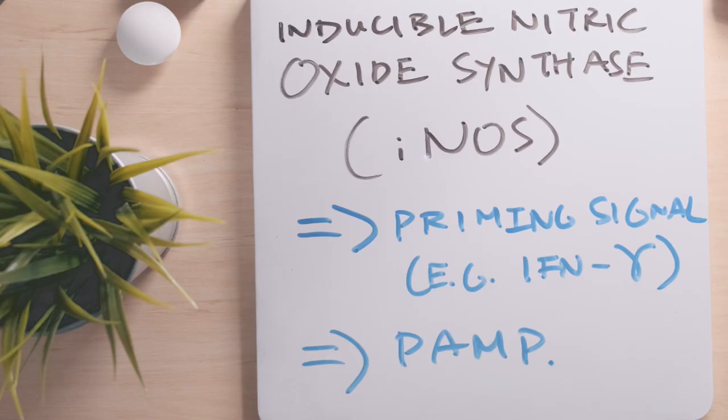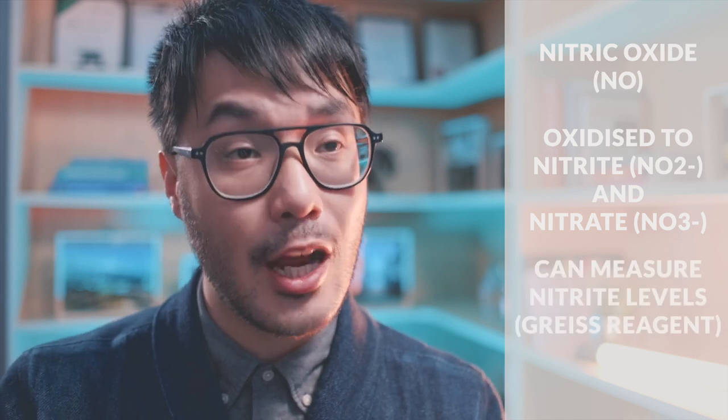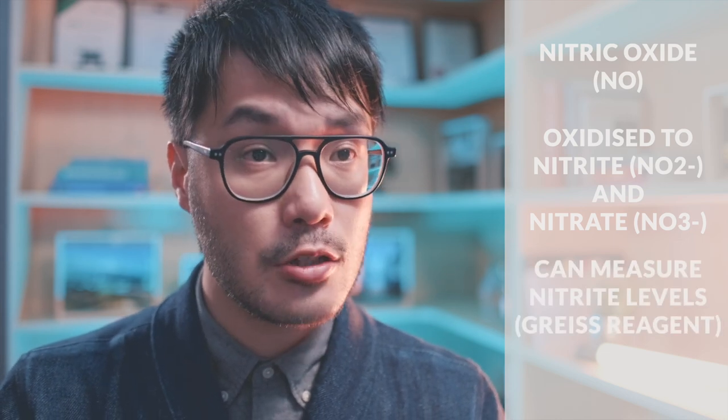In this experiment, we will use interferon gamma as the priming signal for macrophages. When these conditions are met, the macrophages make nitric oxide, which can be oxidized to nitrite and nitrate. The amount of nitrite can be monitored through its reaction with Griess reagent, which generates a pink compound measurable using a spectrophotometer. The intensity of the pink color allows us to calculate the amount of nitrite present, which ultimately gives us the level of nitric oxide production.